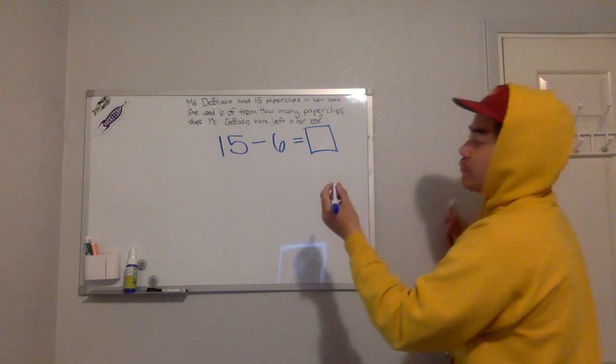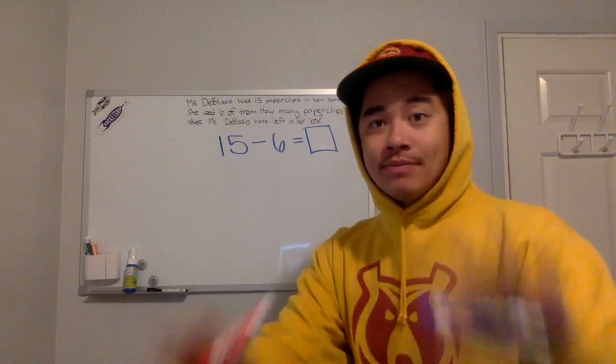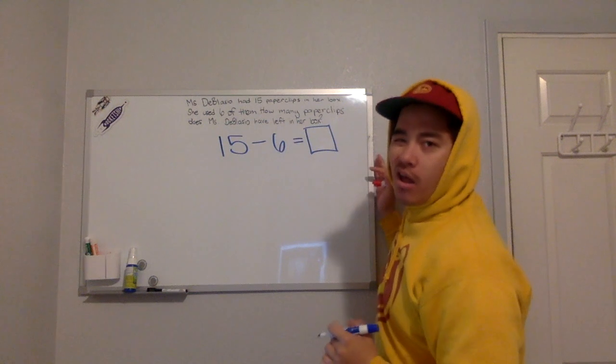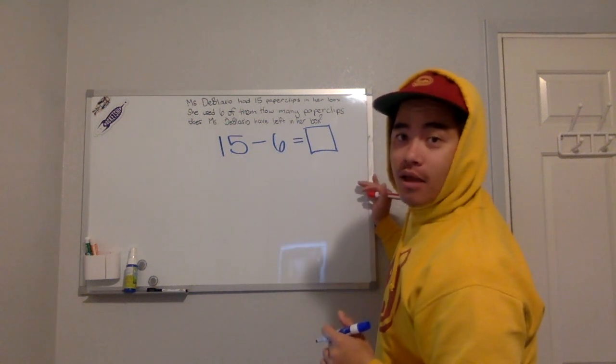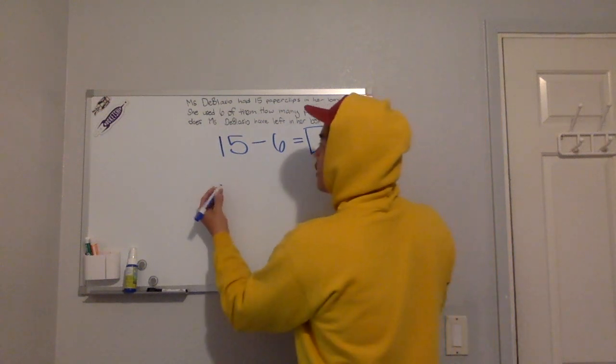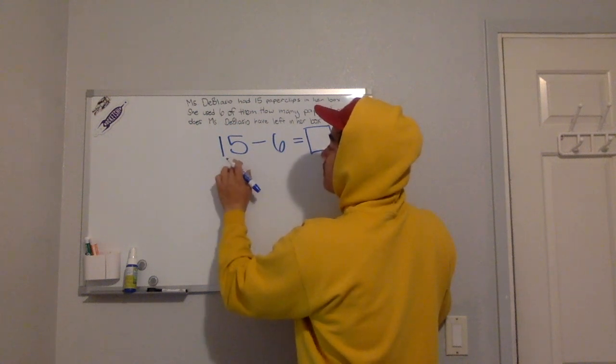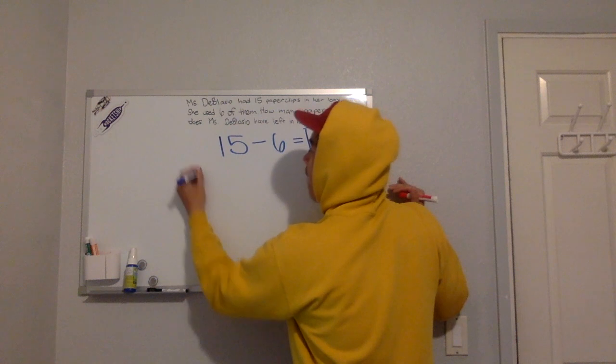Another strategy we could have used was by making 10s. So 15. 15 makes us say what? Yeah, 15 makes us say bleh. We want a friendly number. So our closest friendly number when we go down from 15 is 10.